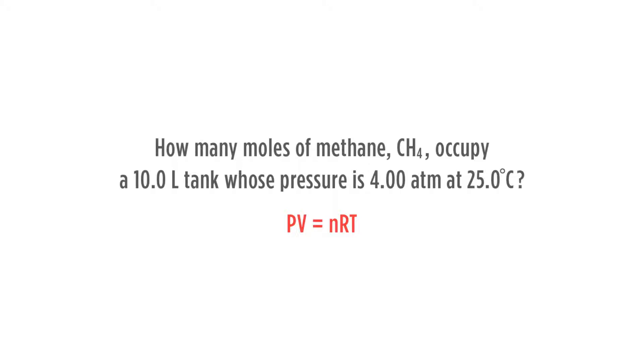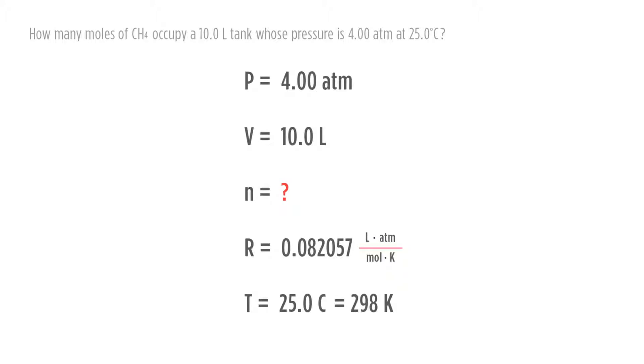Now we have to figure out what each of those values are. From the problem, we know that we are looking for the number of moles. We know that our pressure is 4.00 atmospheres. We know our volume is 10.0 liters. We know R because R is our constant. And our temperature is going to be 25.0 degrees Celsius. We'll need to convert that into Kelvin, so we'll add 273, so we'll get 298 Kelvin.